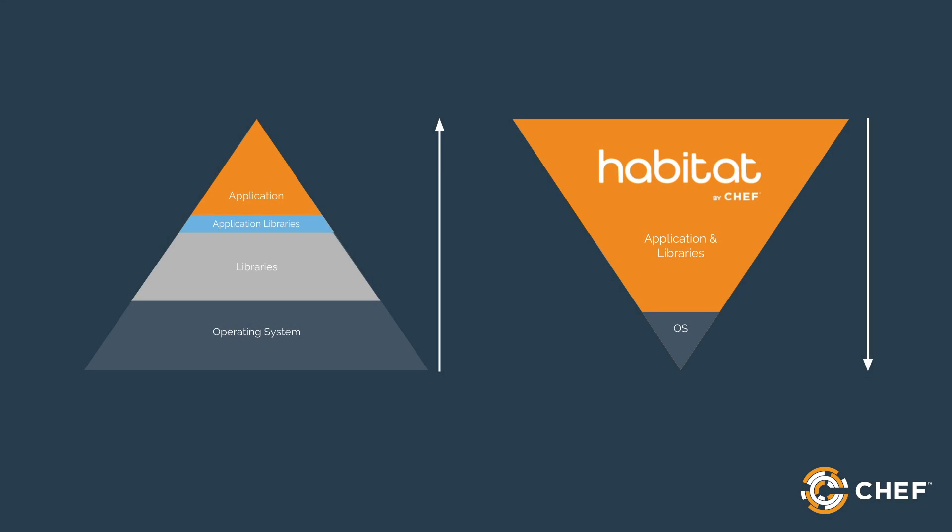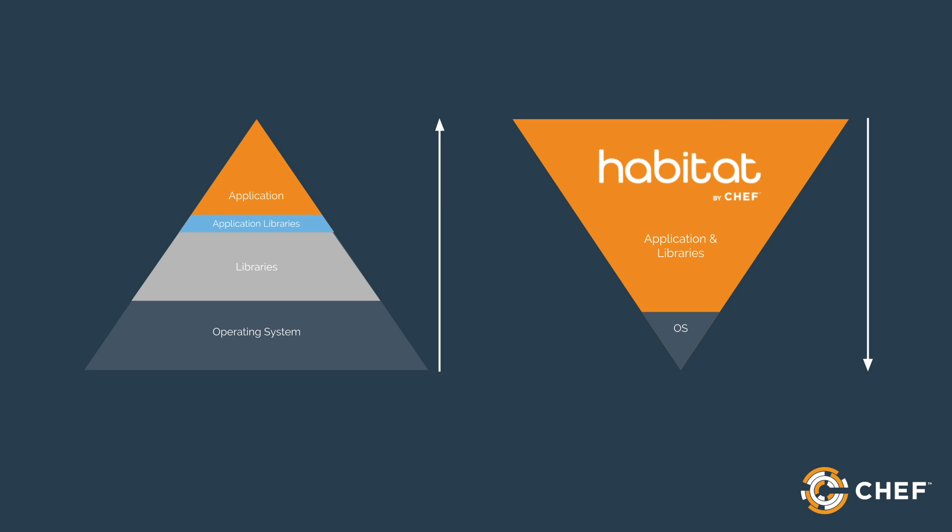The pyramid on the left side of this diagram represents the historical approach to application development, where an engineer — usually an ops person — spins up the required operating system, installs any needed libraries, run and build time dependencies, and then makes sure that any app-specific libraries and dependencies are installed before handing it over to the developer to do their thing. The developer makes their changes, tests, and then hopefully commits that code back to a repo.